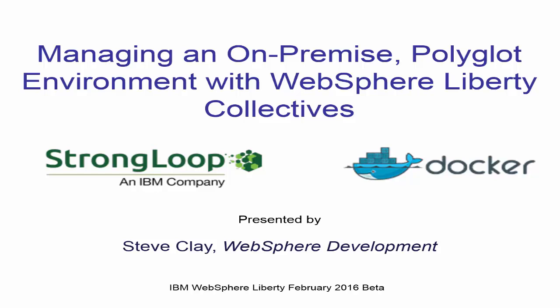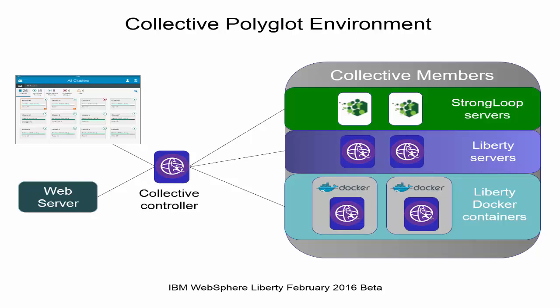This video demonstrates managing an on-premise polyglot environment consisting of Liberty servers, StrongLoop servers, and Liberty Docker containers using Liberty Collective controller as a single management interface. Liberty servers are Java runtime based, StrongLoop servers are Node, and Liberty Docker containers are Liberty servers packaged in a Docker container.